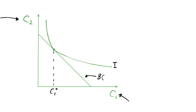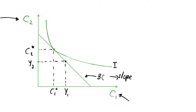At the optimal level of consumption we have c1 star and c2 star. We can also draw the initial income of the consumer in the two periods. Income in period 1 is y1 and income in period 2 is y2. The income point lies on the budget constraint because the consumer can always choose to consume exactly their income. The slope of the budget constraint is negative 1 plus r, reflecting the rate at which consumers can borrow and save.